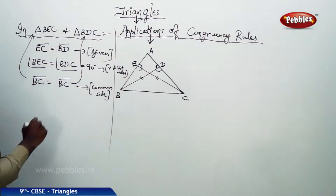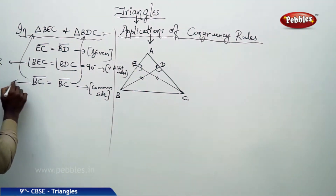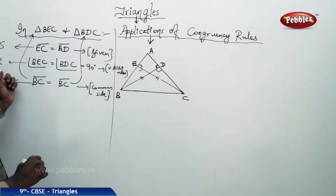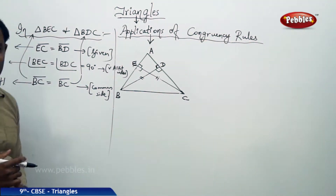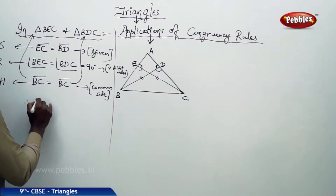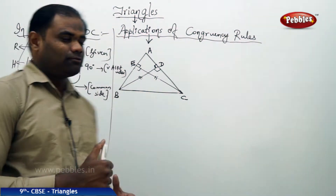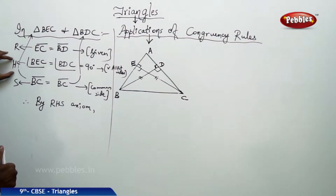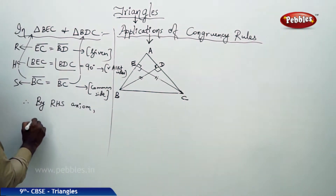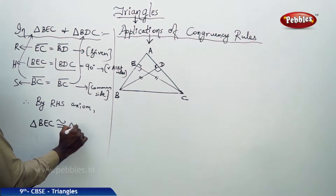Clearly I see that this is the right angle, this is the hypotenuse, and this is the side connecting the two triangles. Therefore the right angle, the hypotenuse, and the side being equal makes me recollect the RHS axiom. Therefore, by RHS axiom — Right angle, Hypotenuse, and Side — I get the property learnt in the previous session.